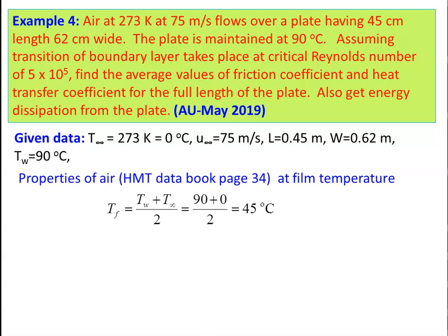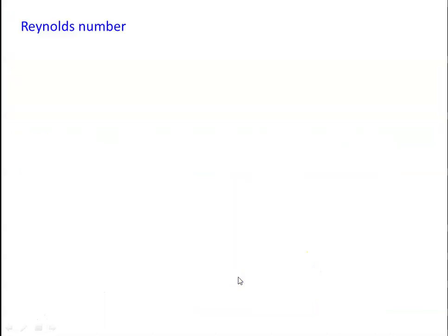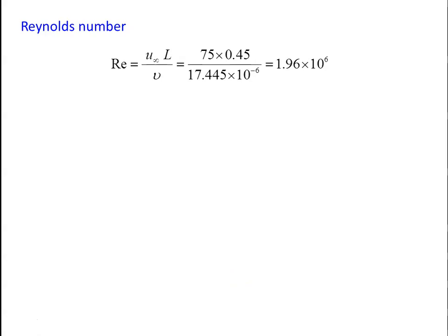Film temperature = (90 + 0) / 2 = 45°C. Properties of air at 45°C by interpolation: ν = 17.445 × 10⁻⁶ m²/s, Pr = 0.6985, k = 0.02791 W/m·K, ρ = 1.1105 kg/m³. Reynolds number = U∞·L / ν = 75 × 0.45 / (17.445 × 10⁻⁶) = 1.96 × 10⁶.